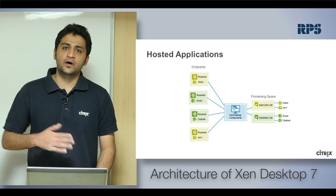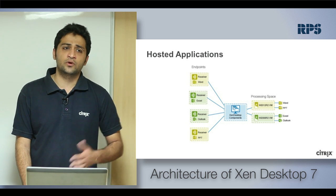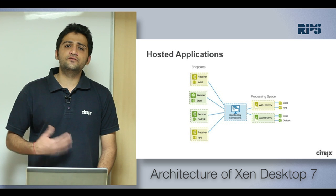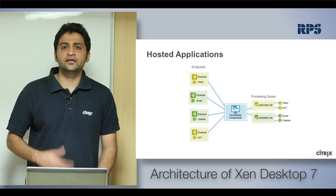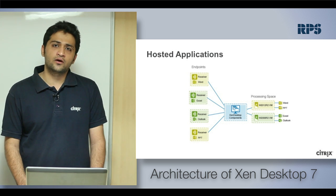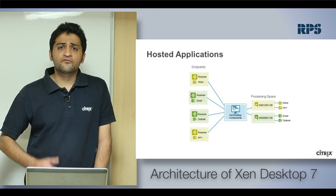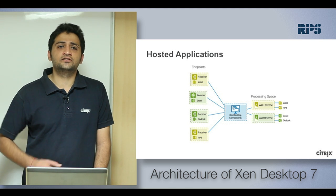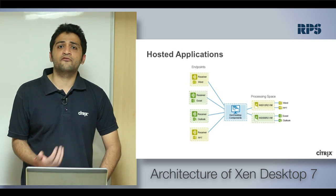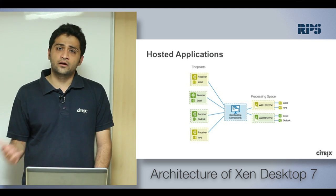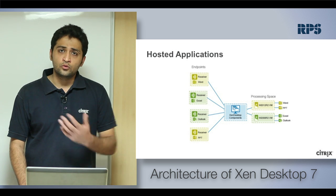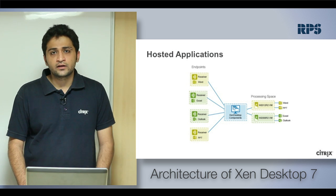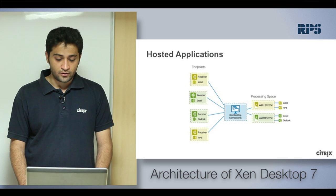One is used for publishing applications and one is used for publishing desktops, which gives quite an edge to administrators and engineers — from the same console they can publish their applications and desktops without having to install another product altogether. We'll now understand the architecture of XenDesktop 7.5.